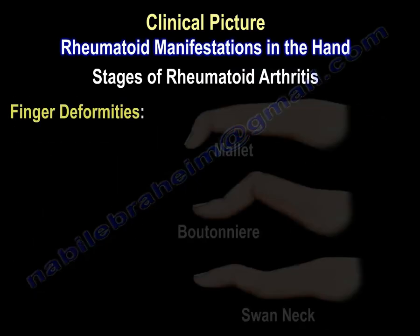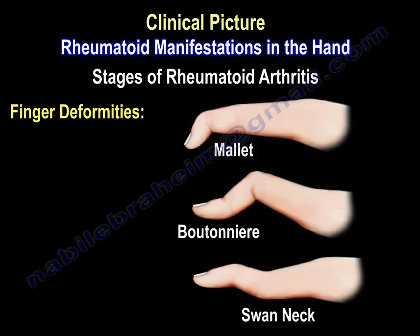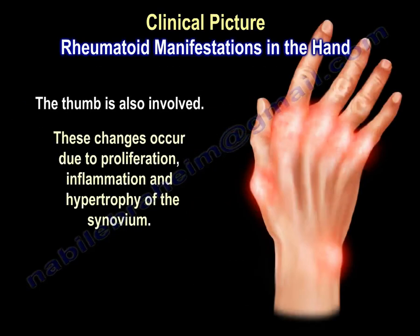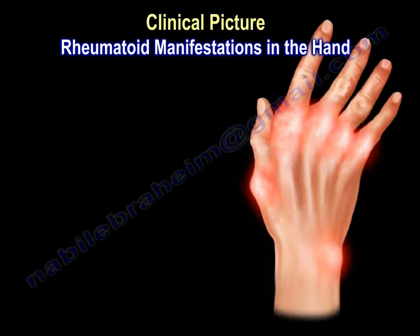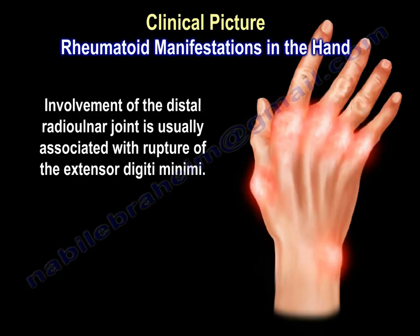Finger deformities include mallet, boutonniere, and swan neck deformities — here is an example of them. The thumb is also involved. These changes occur due to proliferation, inflammation, and hypertrophy of the synovium. Involvement of the distal radioulnar joint is usually associated with rupture of the extensor digiti minimi.